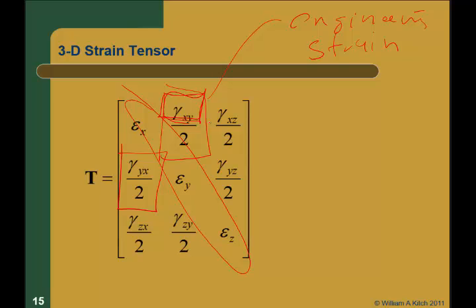The engineering mechanics folks call this engineering strain, where the true strain is actually gamma divided by two. The gamma — that is the real deformation in that plane. In the tensor we divide by two. If you don't understand the details, just remember: when you put it in a tensor, divide by two.